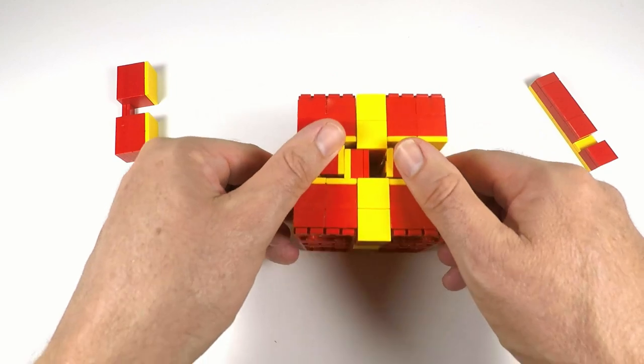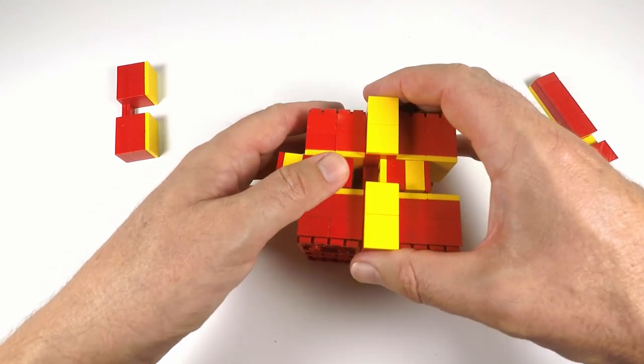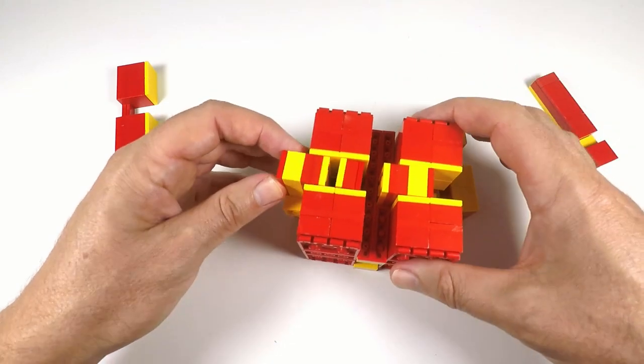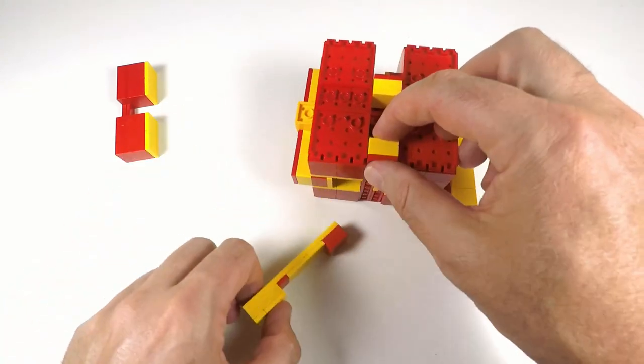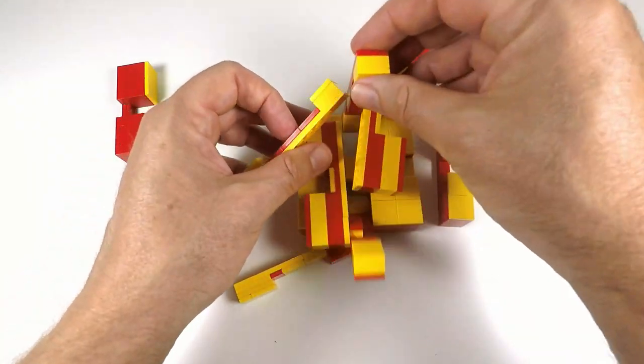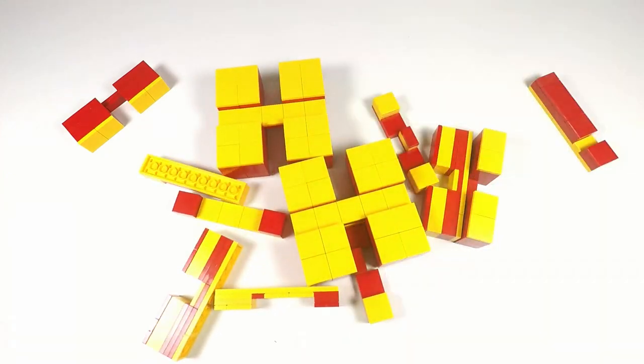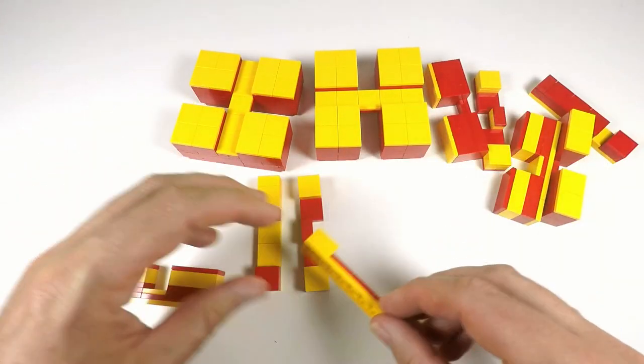We'll take these two pieces out to start with, and then flip this on its side and take out these other pieces here. Now the pieces will start to come out quite easily. We'll take that piece off the top, and all the other pieces come out like that.